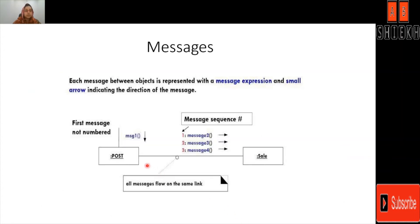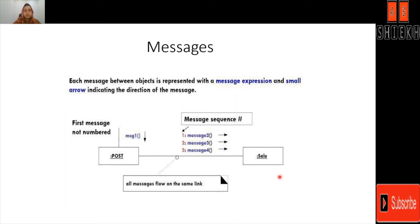Here is another example where a single link has different messages, and all the messages are represented with a sequence — one, two, and three. Each message between objects is represented with a message expression and a small arrow indicating the direction of the message. This particular message is being passed from post to sale.